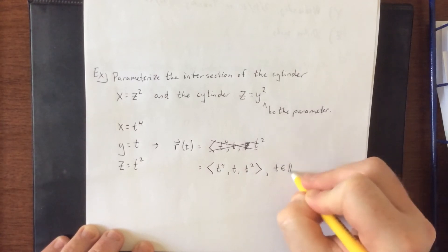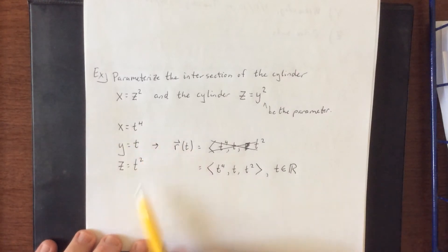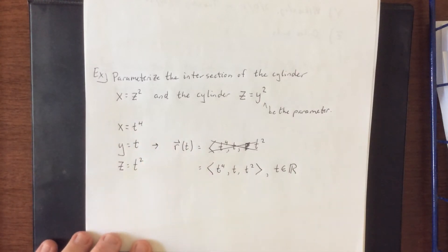There's no restriction on t, so we'll just go ahead and say that t can be any real number. That'll allow y to range through all real numbers and x and z will both be positive values.